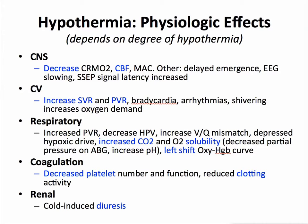The physiologic effects of hypothermia: first of all, on the brain, oxygen use by the brain goes down, therefore blood flow goes down also, and hypothermia is associated with reductions in MAC. EEG — if hypothermia is very cold down into the 15 to 20 degree range, you can have an isoelectric EEG. Mild to moderate levels of hypothermia reduce SSEP signal ability, and it takes longer for the signal to get through, so monitoring SSEPs in a situation of hypothermia is more difficult.